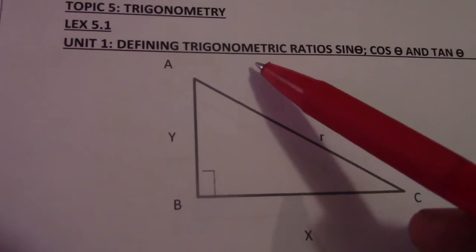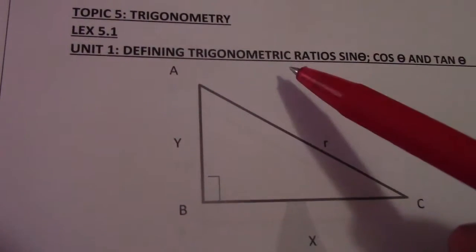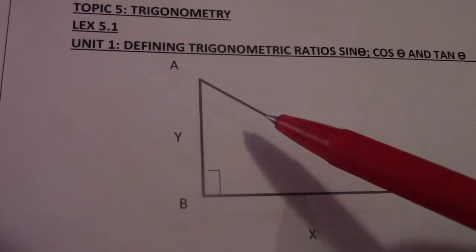Trigonometry we basically use to find either the length of the side or the size of an angle.